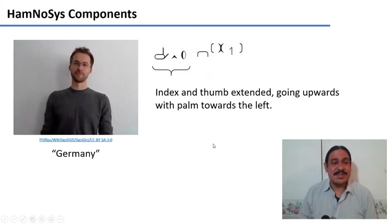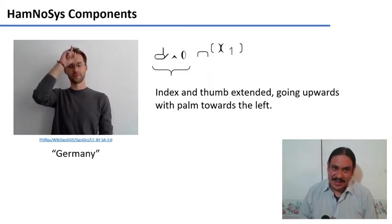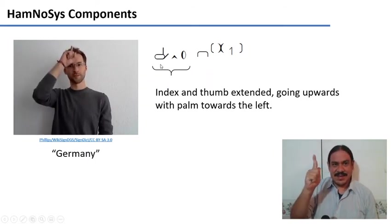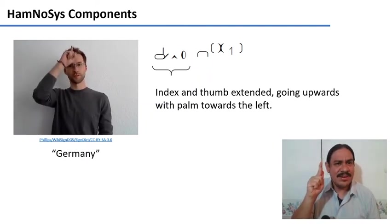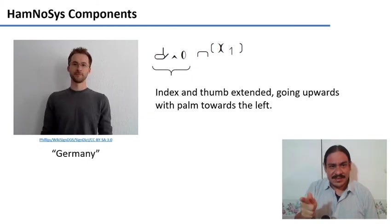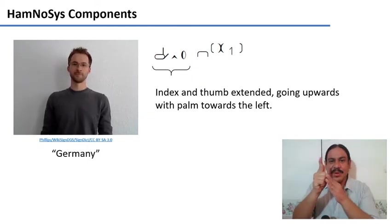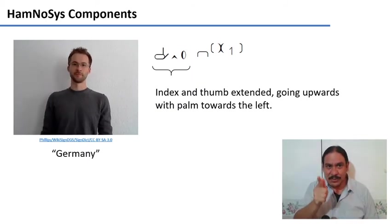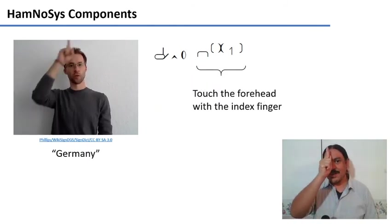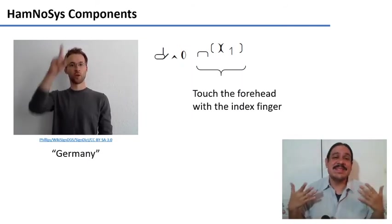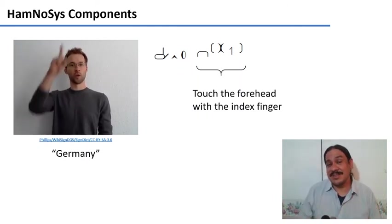This is another example. So this is the word Germany in DGS. The first part of the transcription is, as you can see, index and thumb extended going upwards. And I have the palm wrong. So these are extended. The sign goes upwards and the palm has to be completely towards the left. So I start like this. The second part of the transcription tells you that you need to touch your forehead with your index. Again, what he's doing with his lips is saying Deutschland, but that's not part of the actual sign.